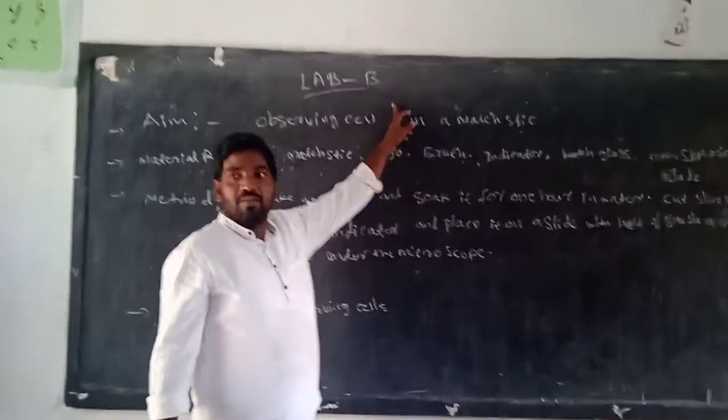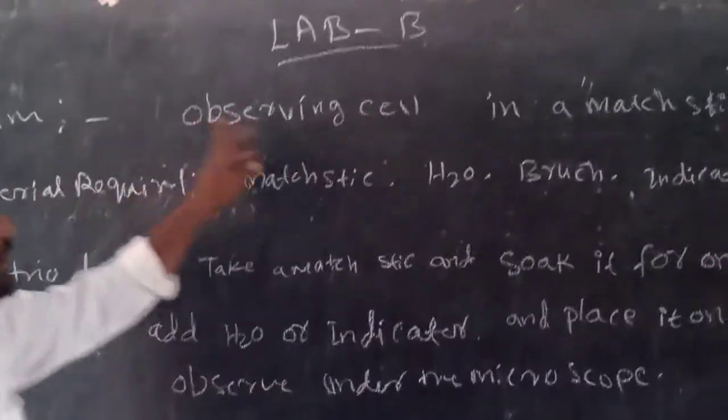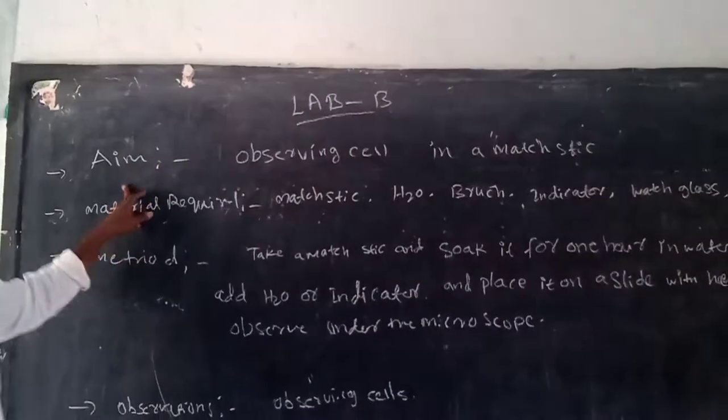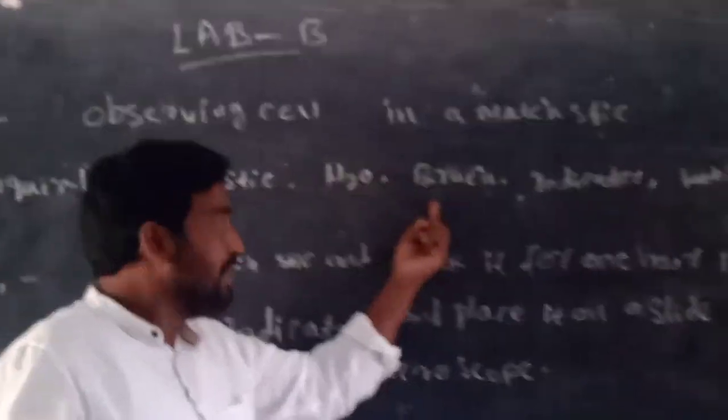Lab activity 4. So today, observing cells in a mastic. This is our experiment, and material required for this lab activity.